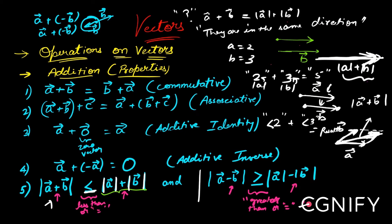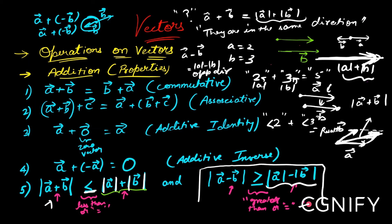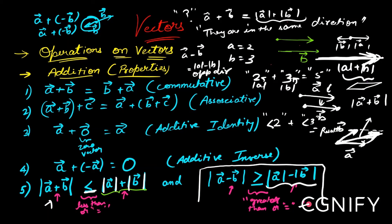Similarly, along the same argument, the difference |a-b| = ||a|-|b|| is valid when a and b are in opposite directions. When they are not in opposite directions, you still need to use the parallelogram law for subtraction, which we will see in the next video. For now, just remember these two inequality properties with the intuition provided. These were the important properties of vector addition, and next let's look at the important formula for the resultant of two vectors.